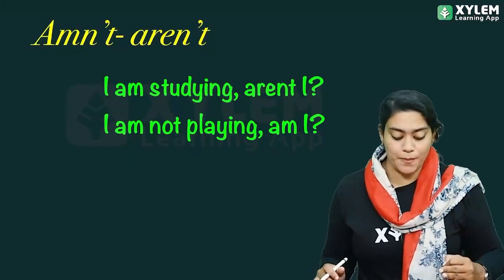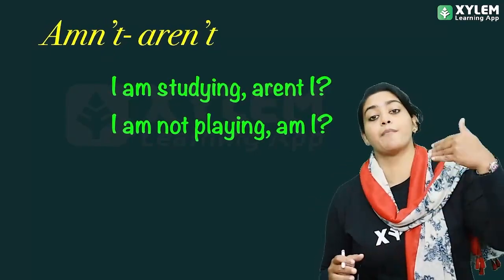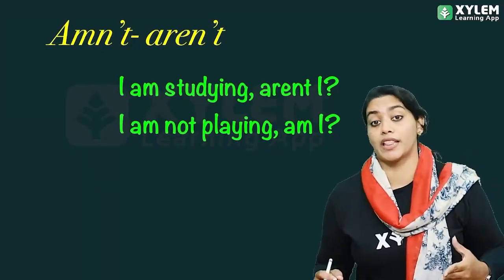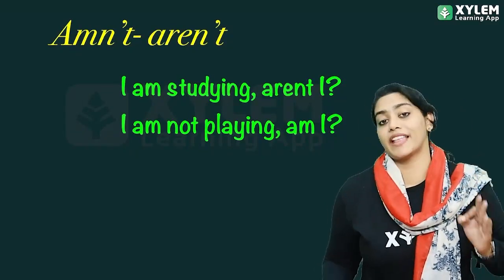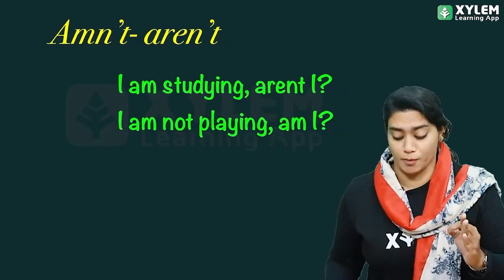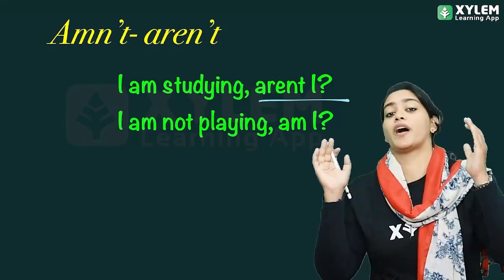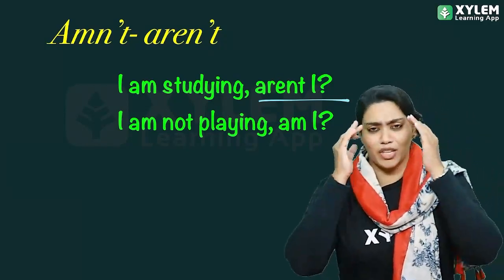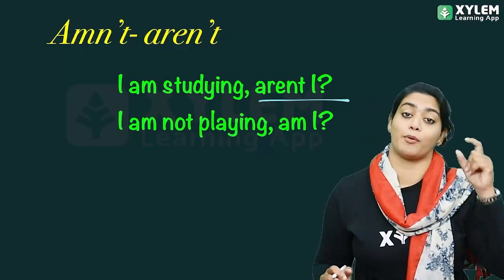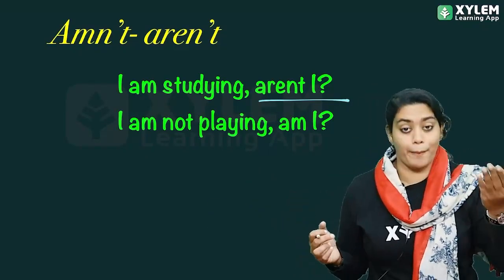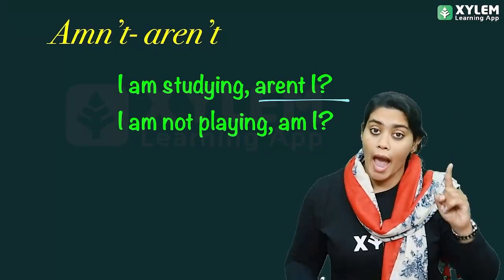Another exception case: 'am,' 'isn't,' 'aren't.' For 'I am,' the tag is normally 'aren't I' — not 'am I not.' So 'I am not' uses a positive tag 'am I?' Because we say 'Am I right?' or 'Am I correct?' That is why the tag is 'am I' — it is positive for 'I am.'